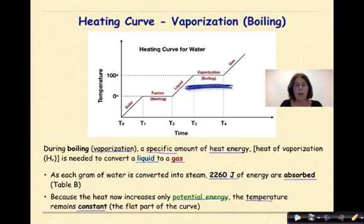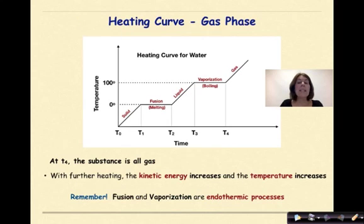And again, if we look at our diagram here, we notice from T3 to T4 that we have a flat line. Temperature is remaining constant because kinetic energy is remaining constant, but potential energy is increasing. At T4, the substance is all a gas. With further heating, the kinetic energy increases and the temperature will ultimately increase. Remember, fusion and vaporization are endothermic processes.